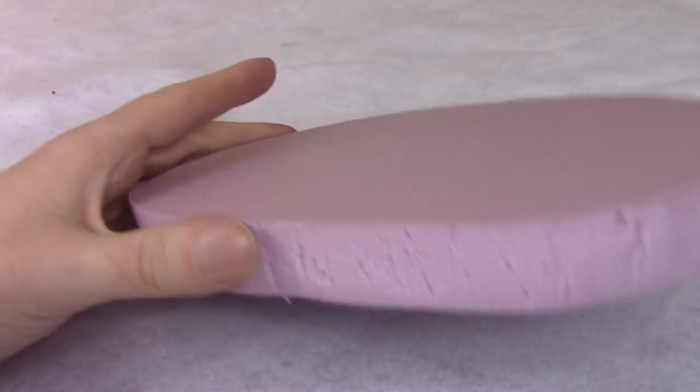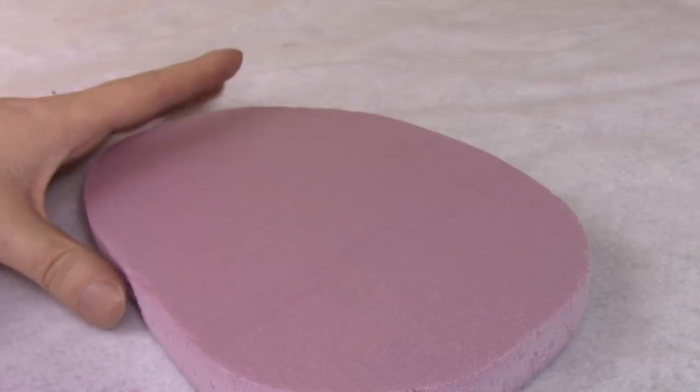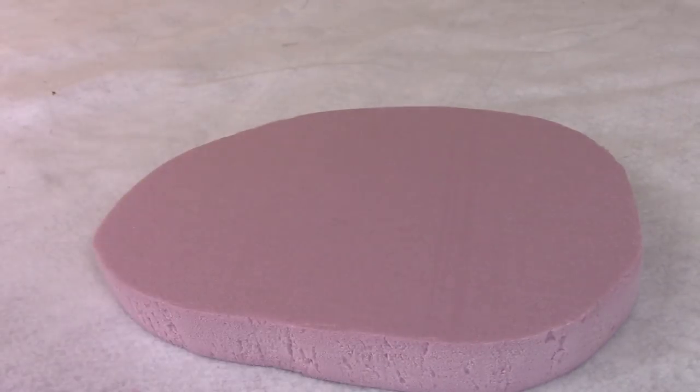My plan for this terrain piece is to have the sides here look gray and rocky, and then I'll use flock along the top to make it look grassy. We can just paint acrylic paint right onto this and it'll take it. You don't have to prime it.